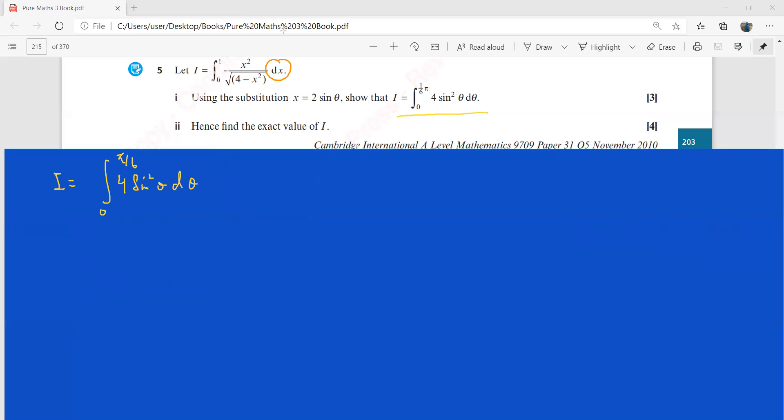We can integrate this sin squared theta. Remember those two rules: if you have 2 sin squared theta, that is 1 minus cos 2 theta, and this 2 cos squared theta is going to be 1 plus cos 2 theta. So we're using this one here.